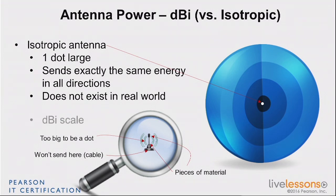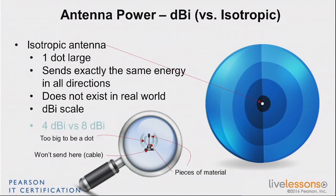That gives us what we call the dBi scale — decibel again, but the reference is not 1 milliwatt, it's the isotropic antenna: dBi. So if you have an antenna that has 4 dBi and another one has 8 dBi — we call that gain, and we'll come back on that more extensively — you can compare these two.